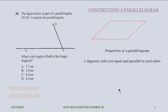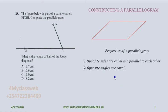Let us look at some of the properties of a parallelogram. Property number one: opposite sides are equal and parallel to each other. This side here is parallel to the other side, and these two lines are equal. We also have that opposite angles are equal — this angle is opposite the other one, and those two angles are equal.